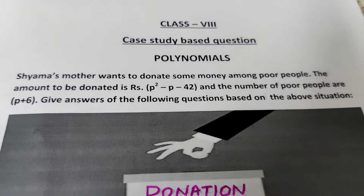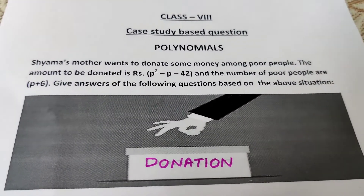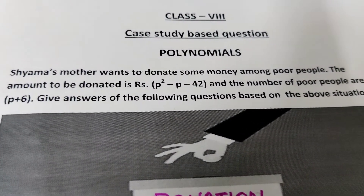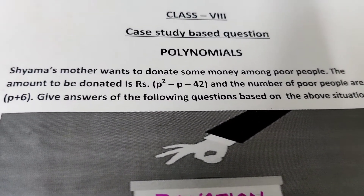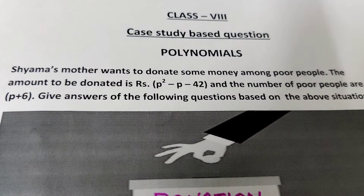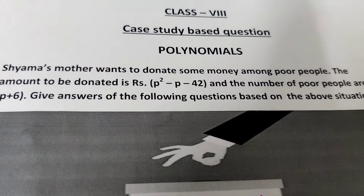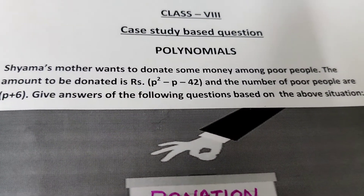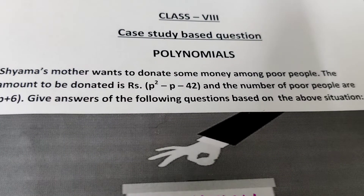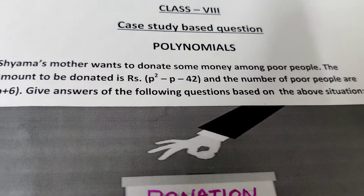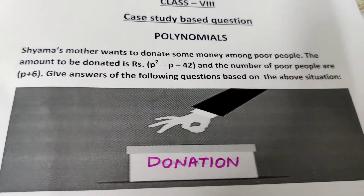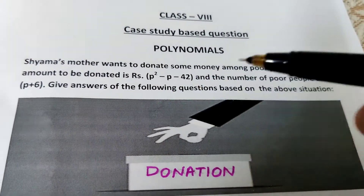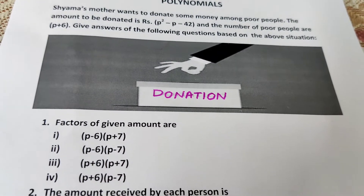This is a case study based question for Class 8, Chapter: Polynomials. Shama's mother wants to donate some money among poor people. The amount to be donated is rupees p squared minus p minus 42, and the number of poor people is p plus 6. We need to answer the following questions based on this situation.